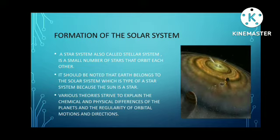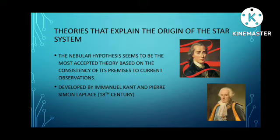In the formation of the solar system, a star system — also called the solar system — is a small number of stars that orbit each other. Every stellar system has a center. It should be noted that the Earth belongs to the solar system, which is a type of star system because the sun is a star. Various theories strive to explain the chemical and physical differences of the planets and the regularity of orbital motions and directions.